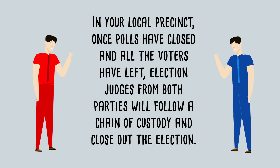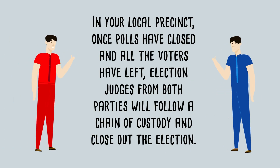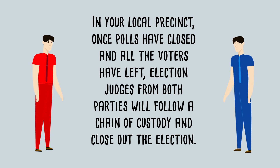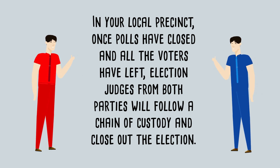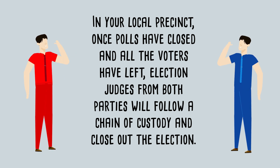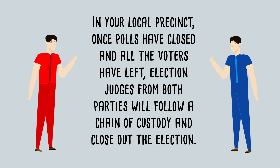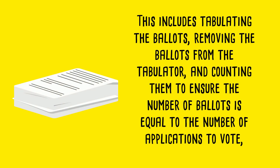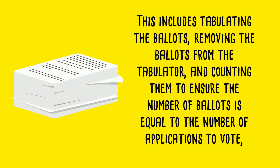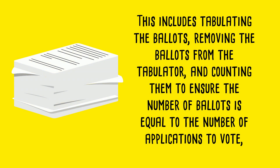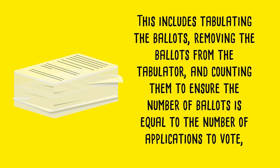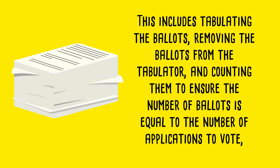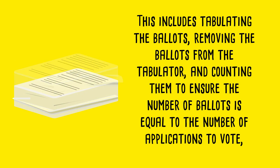In your local precinct, once polls have closed and all the voters have left, election judges from both parties will follow a chain of custody and close out the election. This includes tabulating the ballots, removing the ballots from the tabulator, and counting them to ensure the number of ballots is equal to the number of applications to vote.